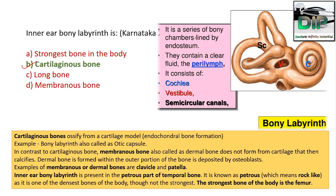The bony labyrinth is a series of bone chambers lined by endosteum, which contains a clear fluid called perilymph, and it consists of cochlea, vestibule, and semicircular canal — remembered by CVS. Cartilaginous bones ossify to form from cartilage, so it is endochondral bone formation. The example is the bony labyrinth, also called the otic capsule. In contrast, membranous bone, also called dermal bone, doesn't form from cartilage but calcifies.